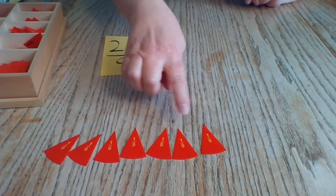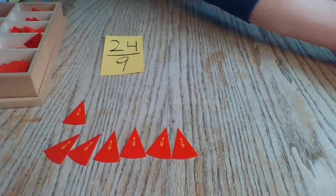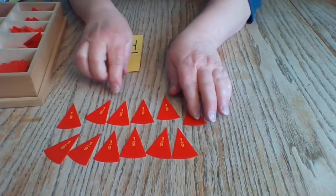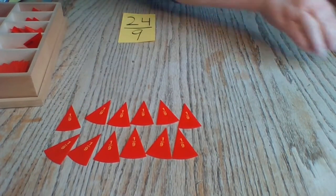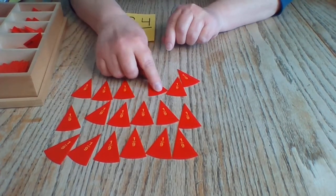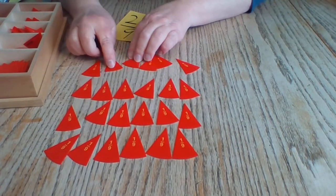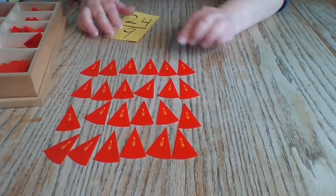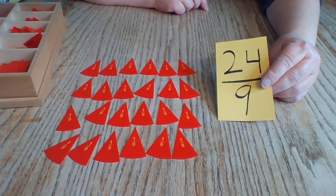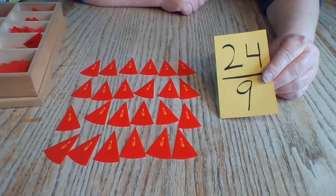I just happen to have them set out over here on the side. I'll just bring them over so you can see them. Counting out the pieces: one through six, seven through twelve, thirteen through eighteen, nineteen through twenty-four. That is 24 ninths. That's a lot of ninths. I can't quite imagine what 24 ninths looks like unless I lay them all out like this.